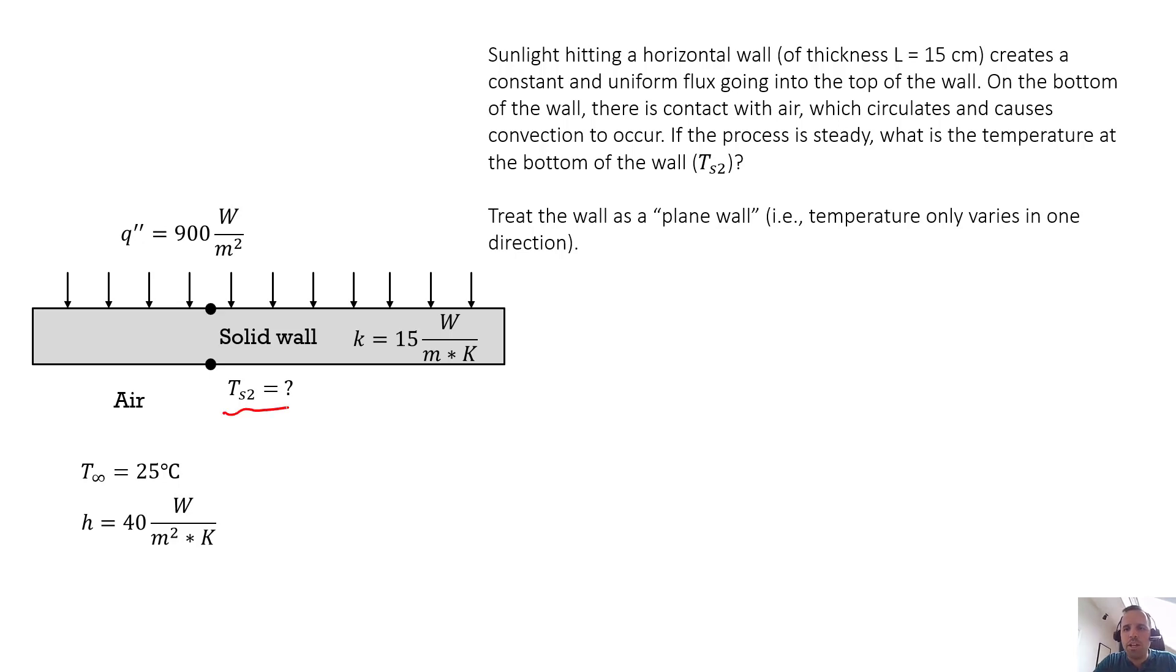We're going to treat the wall as a plane wall, meaning that temperature only varies in one direction. So we're going to assume that temperature will vary in this direction going down, but it will not vary in this direction left and right, and it will not vary going in and out of this screen. So it's just going to vary, let's call this the x direction, going down.